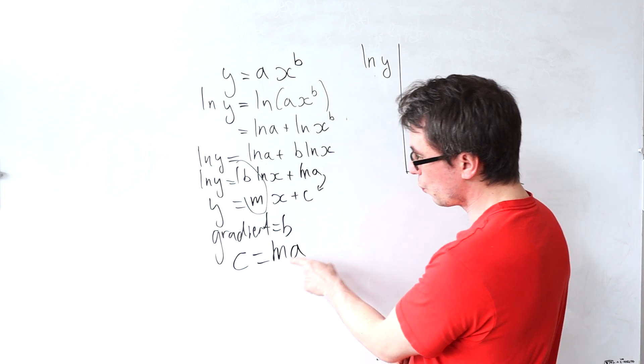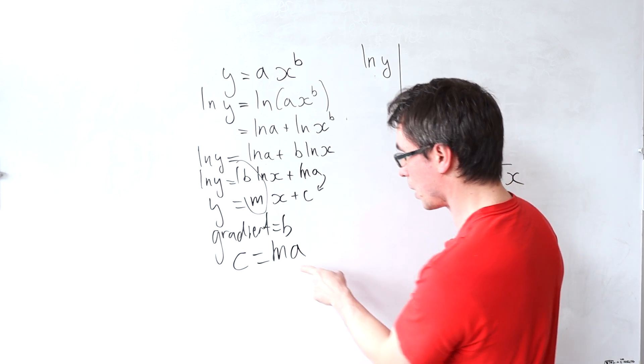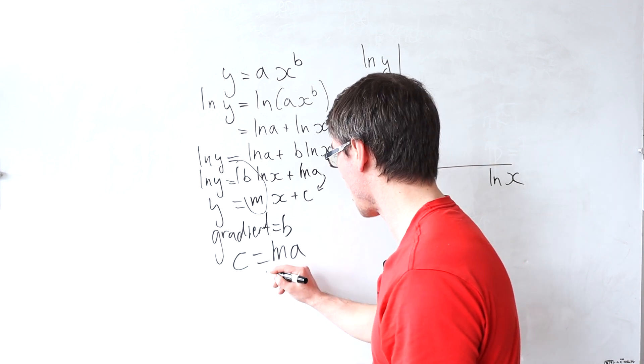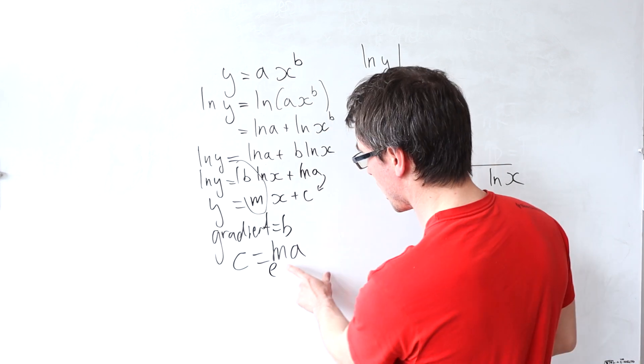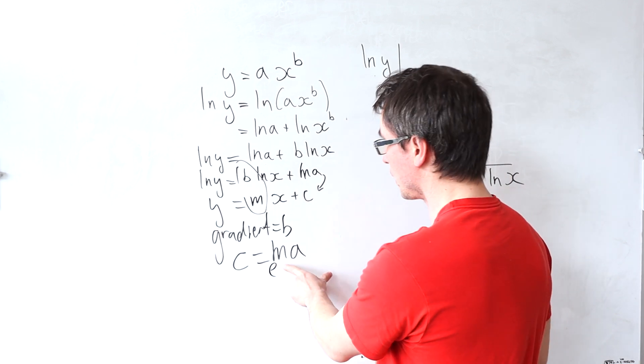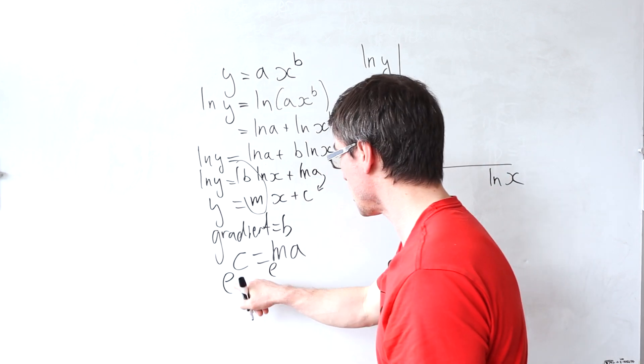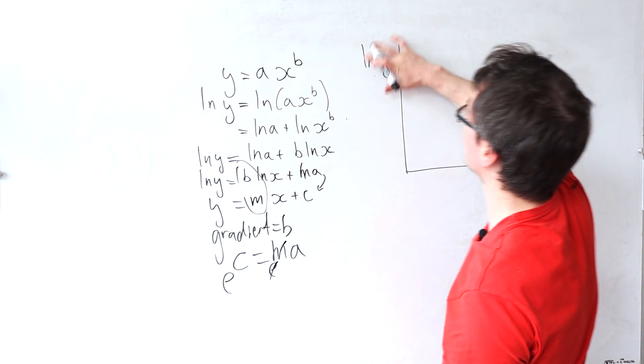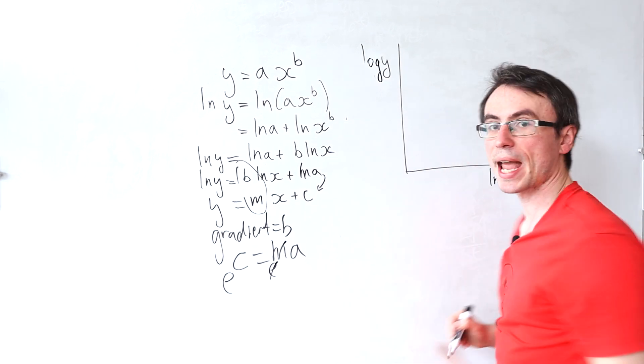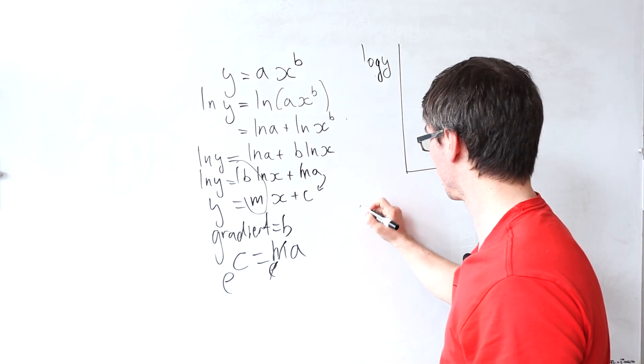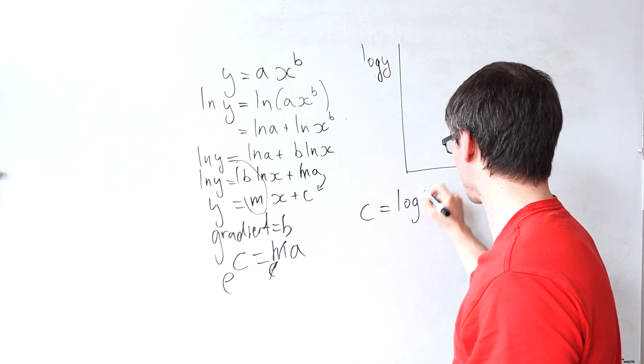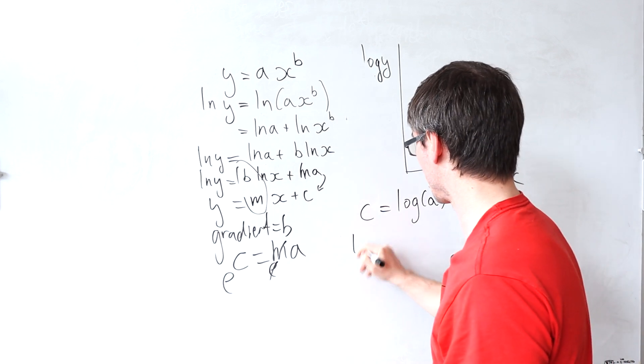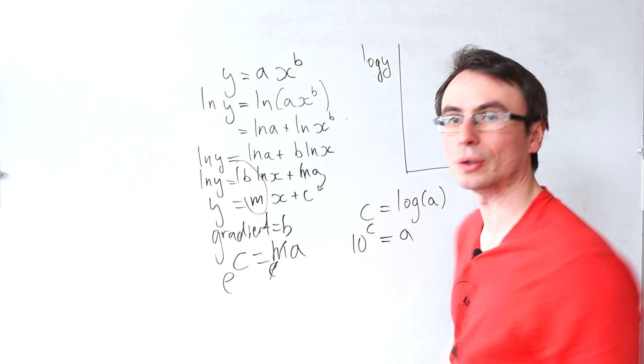Just a little note: if we need to work out what a actually is, we need to take both sides raised to the base of the logarithm. In the case of ln this will be e, so e to the power of c equals a. If this was a log base 10, then c equals log of a, meaning that 10 to the c equals a.